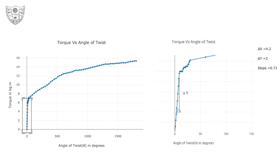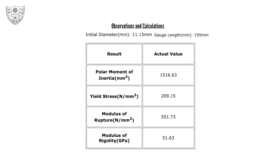The graph is plotted for torque versus angle of twist. Using the observations, calculate the polar moment of inertia, yield stress, modulus of rupture, and modulus of rigidity.